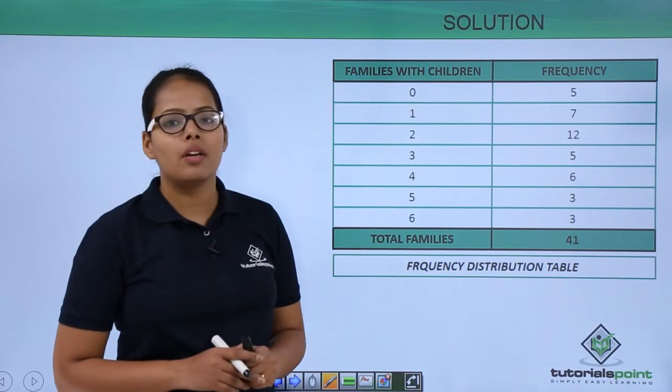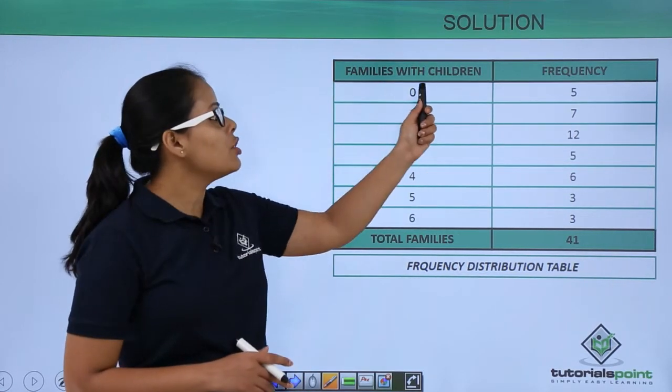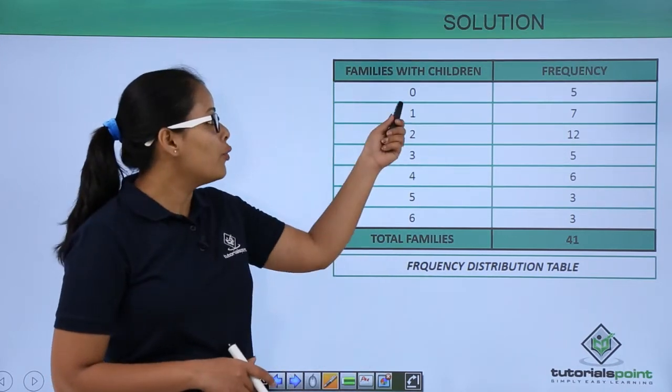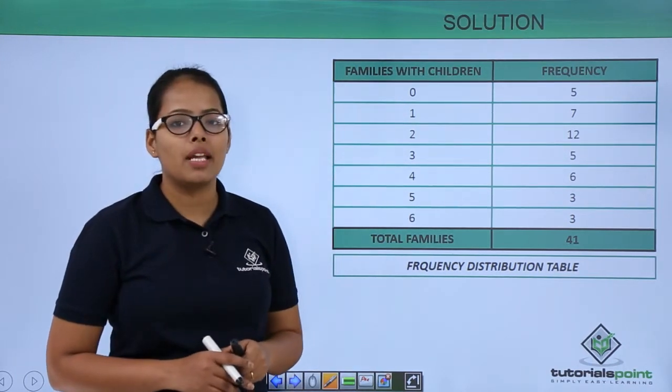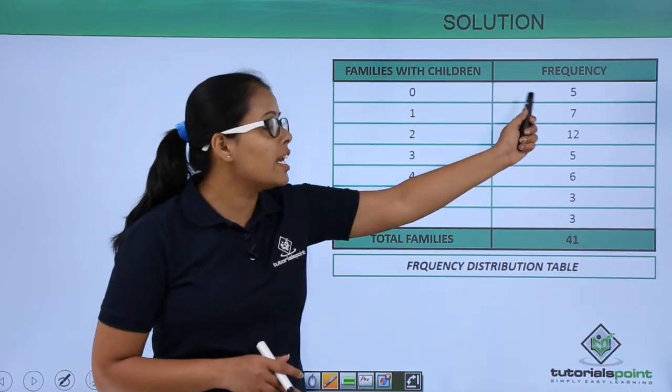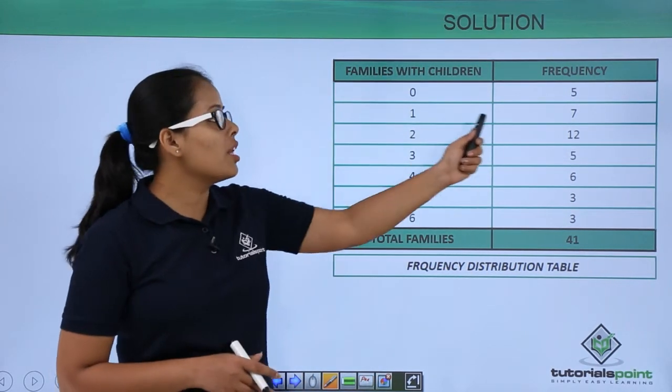Here, this table represents families with children and the frequency related to those children. So for zero children in a family, how many families are there with zero children? There are exactly five families. And for one child, there are exactly seven families with one child.